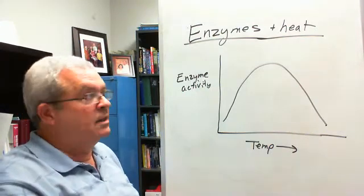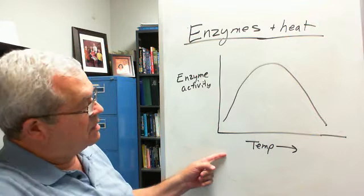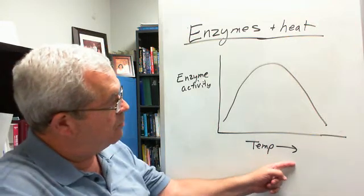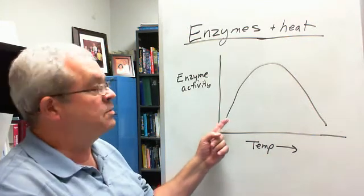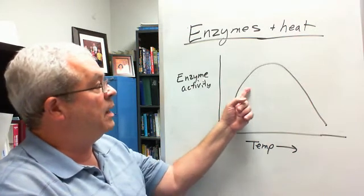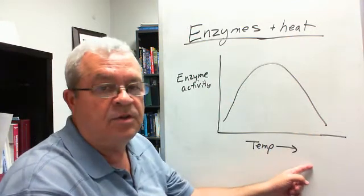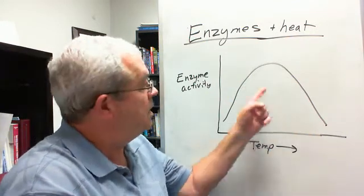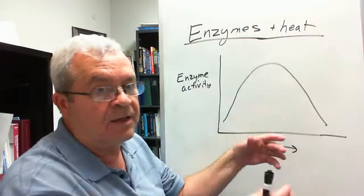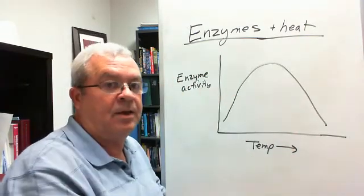What can we say in general about the effect of temperature on enzyme activity? We can say as temperature goes up, at least for a while, enzymes work better and better and better. But then as temperature continues to go up, the enzymes work less and less. Finally it looks like they just go belly up — they quit.